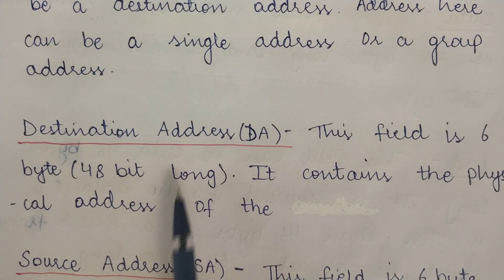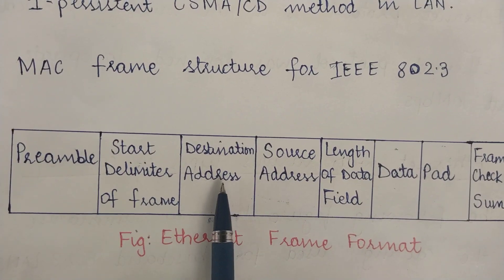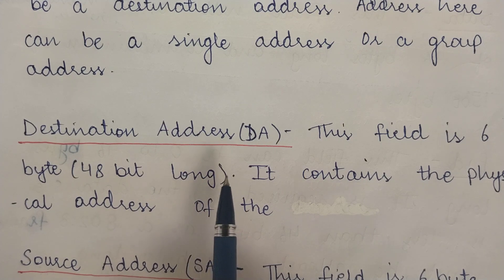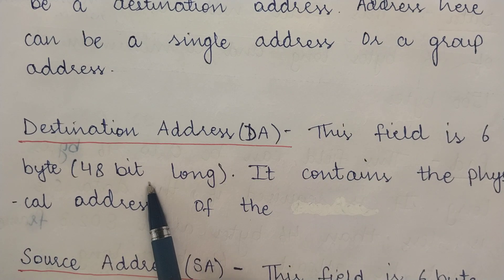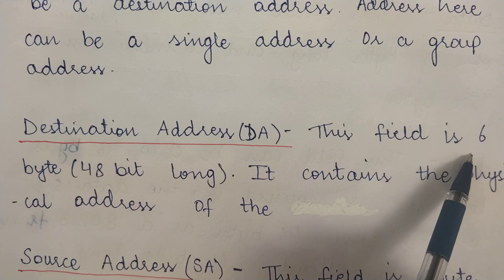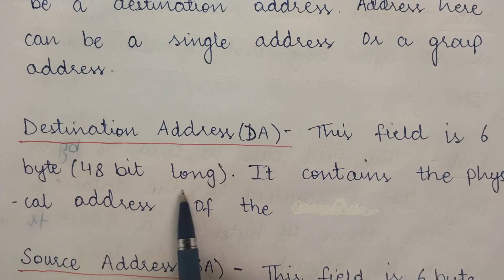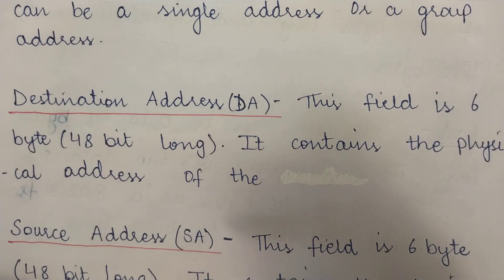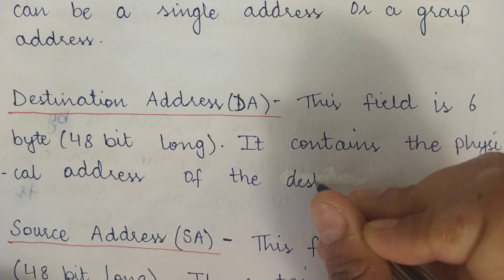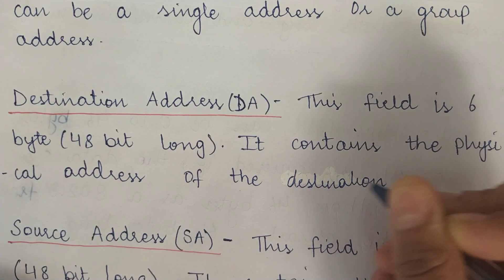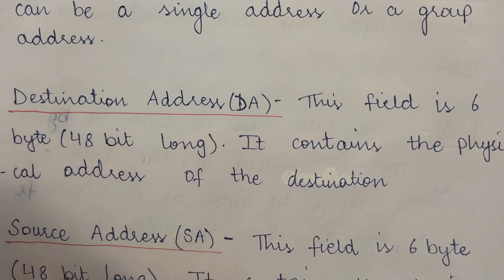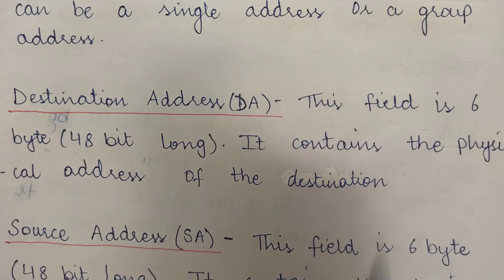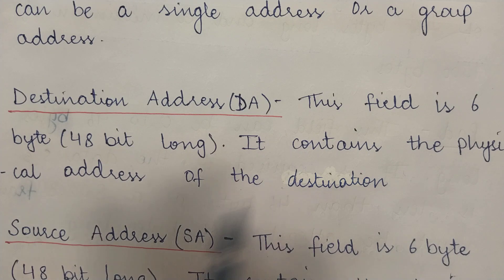The third field is the destination address (DA), which is 6 bytes (48 bits) long. It contains the physical address of the destination node. Upon receiving a frame, each node checks this field — if the destination address matches its own address, it keeps the frame; otherwise, it discards it.